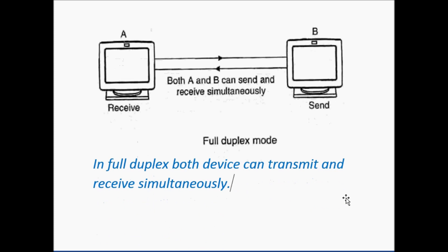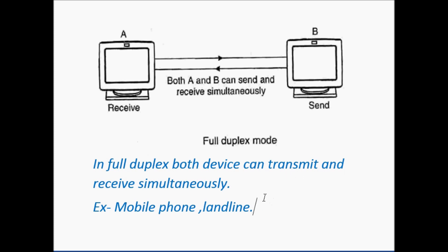For example, a mobile phone and a landline are examples of full duplex communication. In a mobile phone, we can talk and listen both at the same time. In mobile phone communication, we can send our voice and receive the voice signal at the same time.